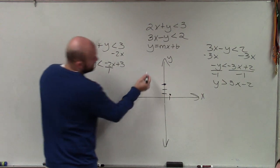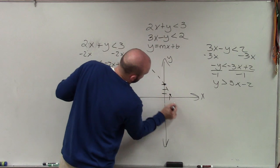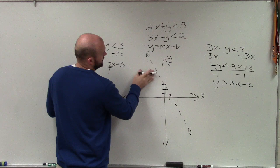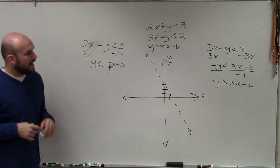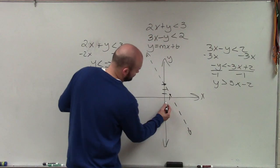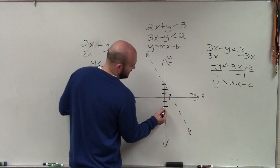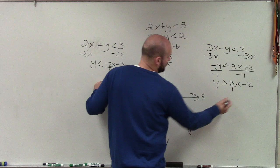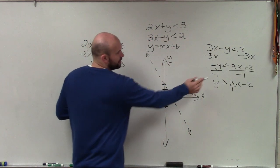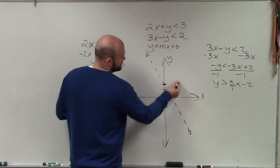So that's going to be down 2 over 1. Notice that this is less than, so I'm going to have a dashed line. Now, we go ahead and go to this one. This one has a y-intercept of negative 2. Make a point. Now, my slope here is 3 over 1. So I'm going to go up 3 over 1. Notice that's greater than. So again, that's going to be a dashed line.